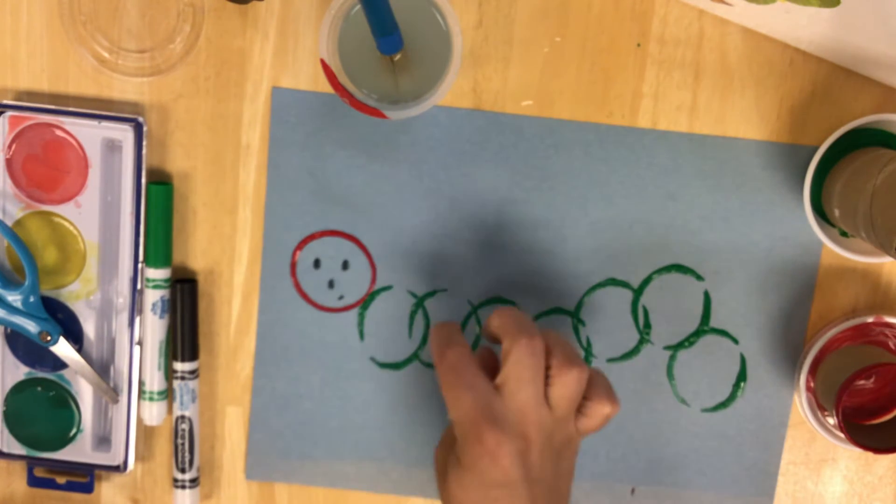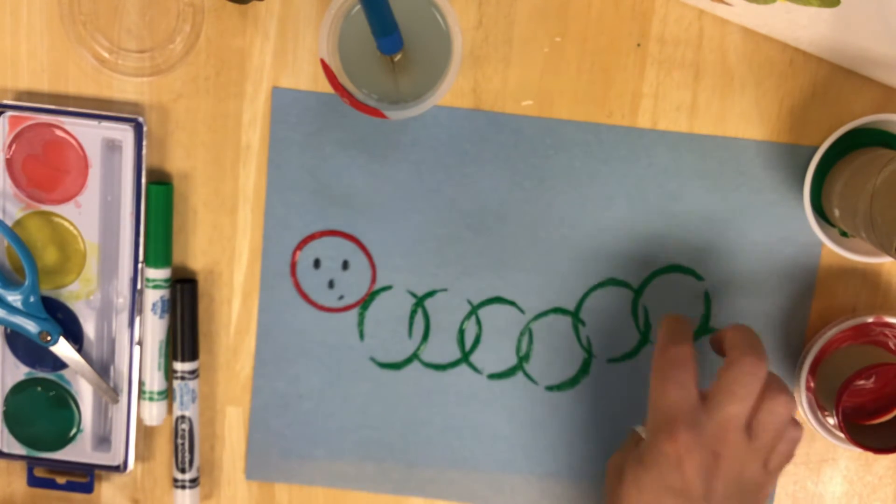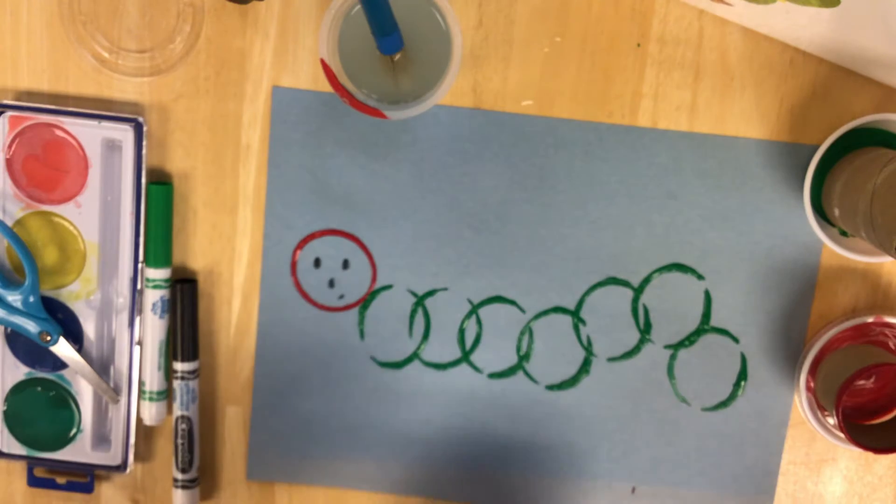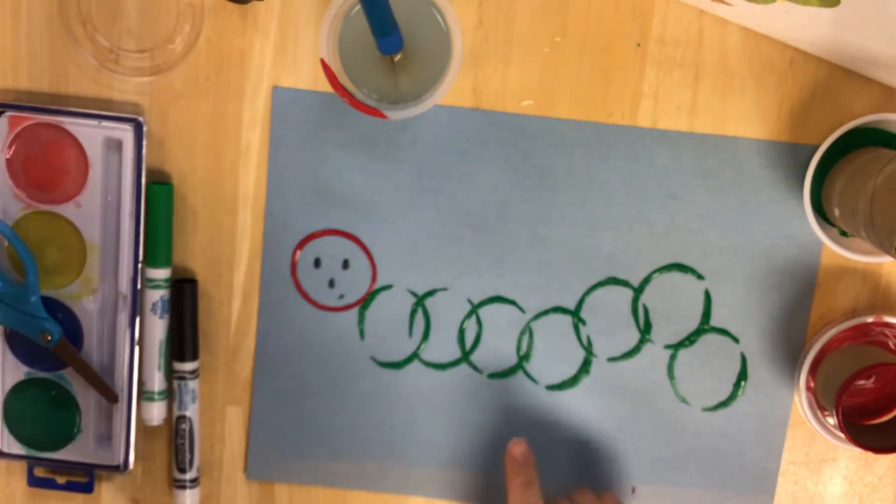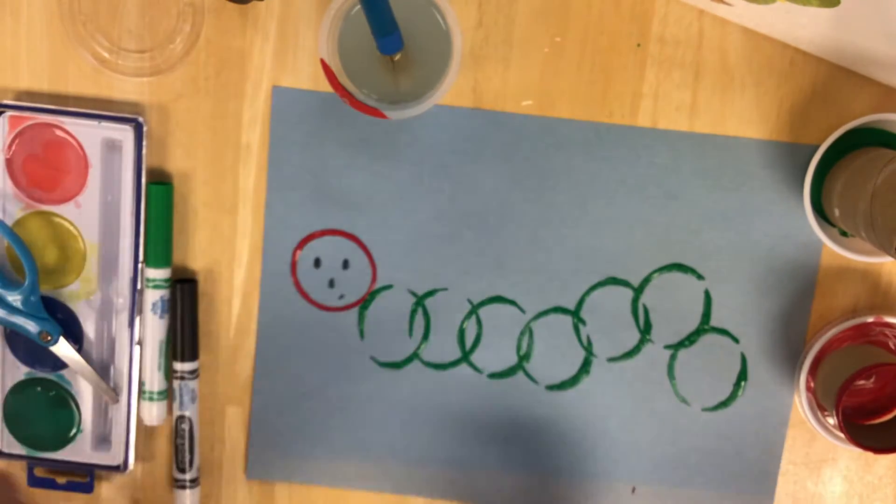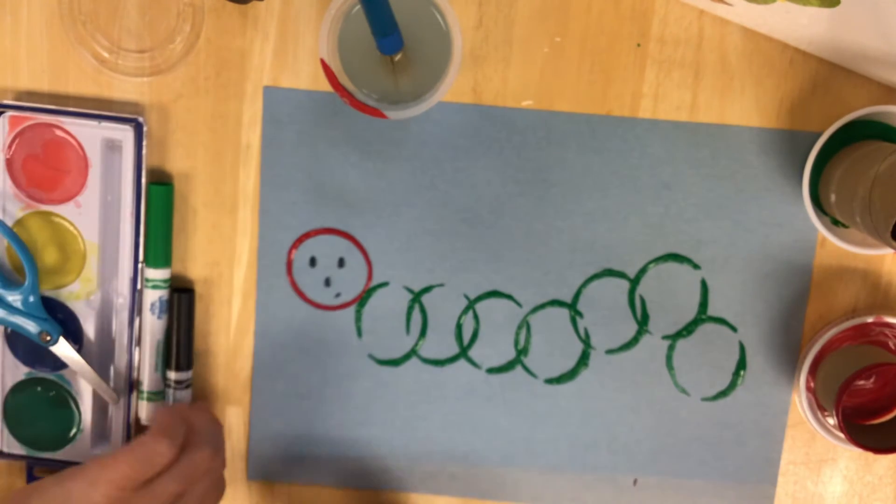I have one red circle. And I have one, two, three, four, five, six, seven green circles. Although they're not really circles so much as ovals. But I really like how my caterpillar is coming along.